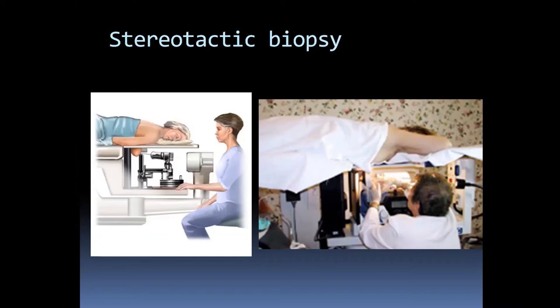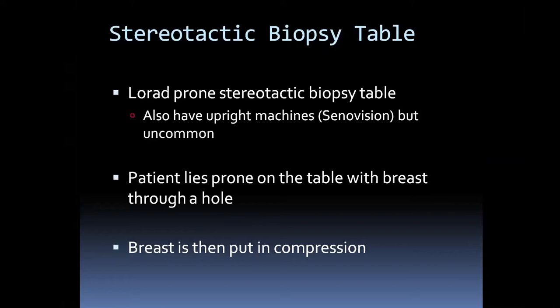A standard mammographic stereotactic biopsy involves the patient lying prone on a table with the breast hanging through a hole. Underneath is essentially a mammogram machine; the breast is against the detector in compression. A great advantage is that the patient cannot see the needle, which is ideal for patients afraid of needles. However, it is not ideal for patients with limited mobility — such as those with spinal fusions — who have difficulty lying on the table. Upright stereotactic biopsies and 3D stereotactic biopsies are also available. At our institution, we use a low-rad prone stereotactic biopsy table, with upright machines also available for attachment to Hologic units.